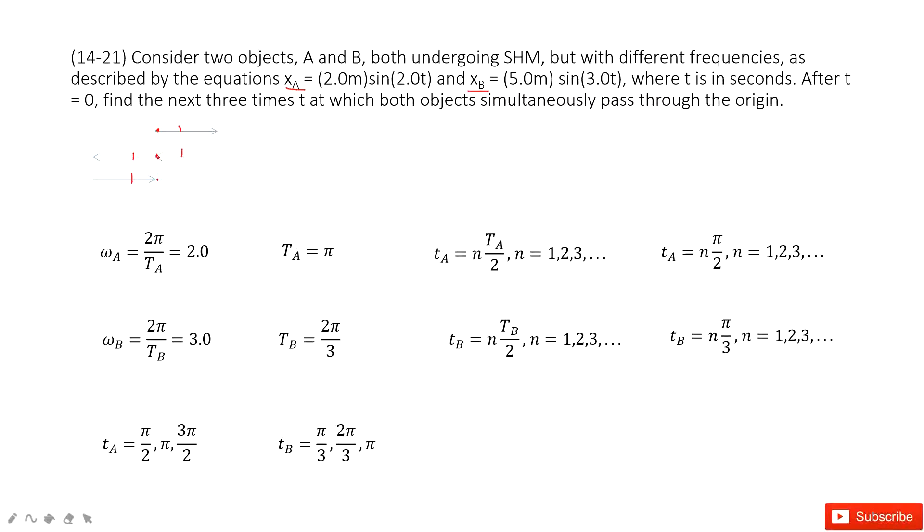So we need to find the period for A and B. We can look at this function - this is called omega, the angular velocity. From omega we can get the period. For A, omega_A equals 2π over T_A, because this is angular velocity.